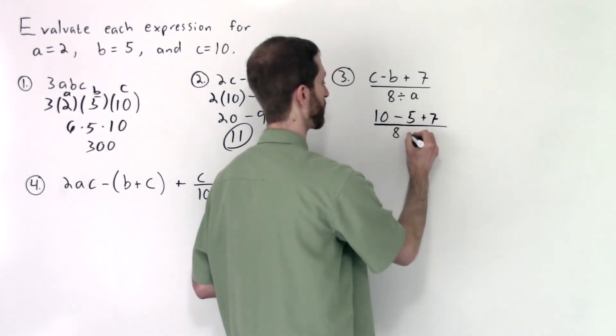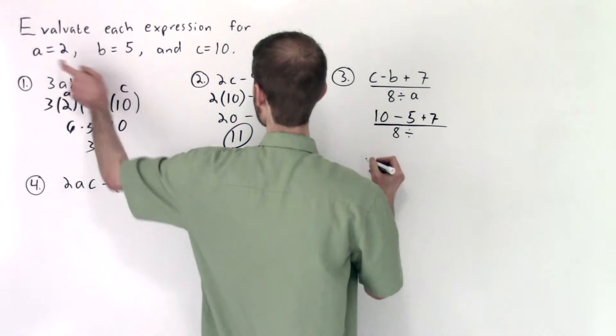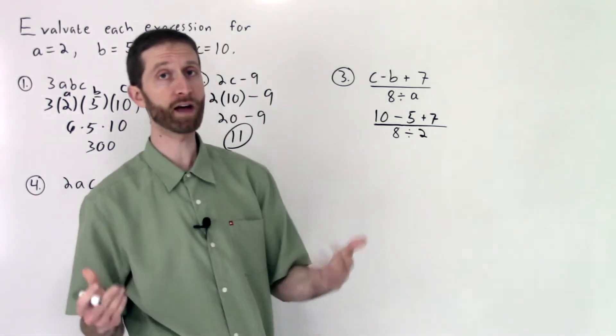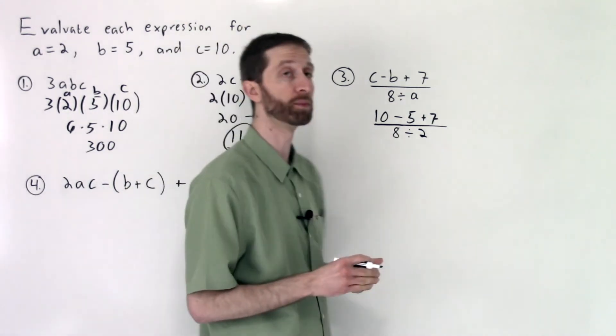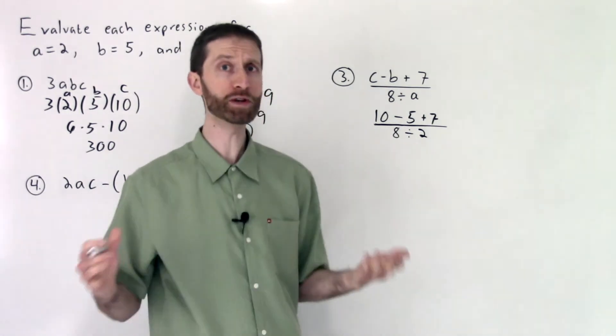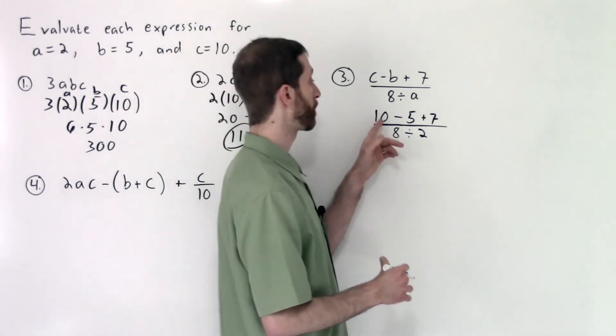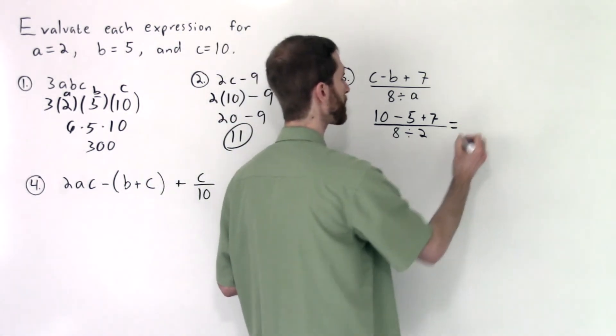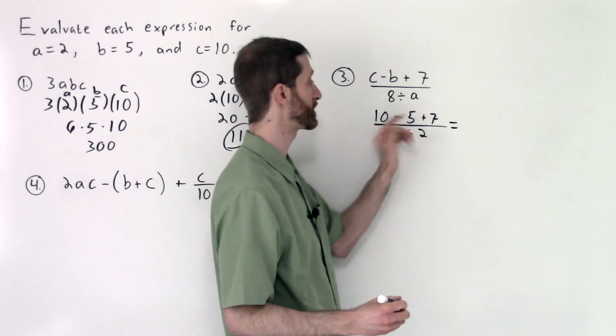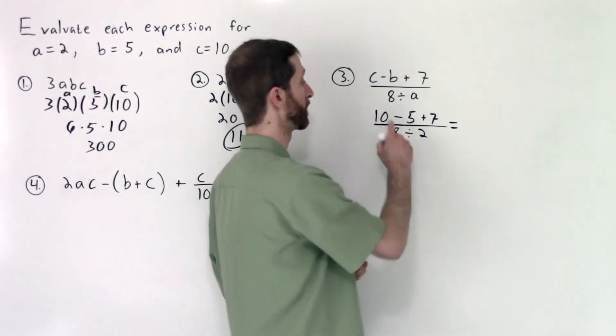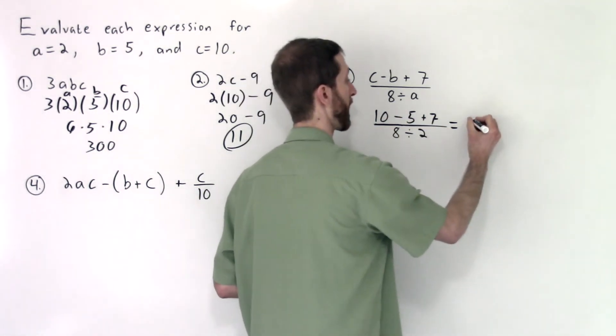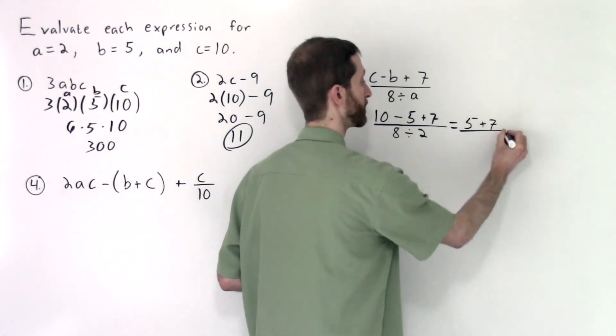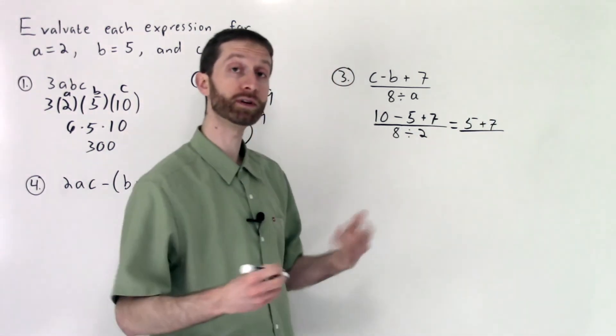Over 8 divided by A, and A is 2. Now handle the order of operations. We basically, with an evaluation problem, replace all our variables and then rock the order of operations as we know how so well. Now we'll do the numerator first. The numerator has subtraction then addition, so we work that left to right. 10 minus 5 is 5, plus 7.